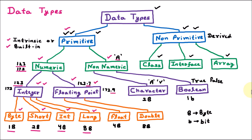Floating point is classified into float (four bytes) and double (eight bytes), used for decimal values. Under primitive, the second category is non-numeric, classified into character and boolean. Character is two bytes and stores characters like 'a' or 'v'. Boolean is one bit and stores true or false. The second major category is non-primitive, derived from primitive, with further types: class, interface, and array. That covers all the data types in Java.